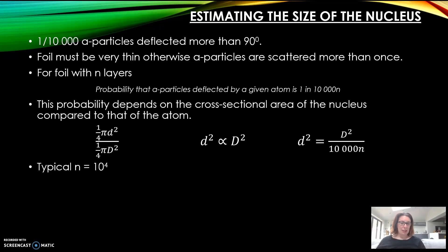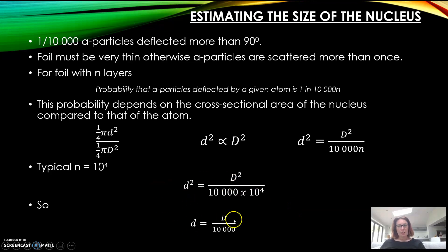Plugging that into the equation you get this, and then taking out the square roots you end up with d, the diameter of the nucleus, is equal to the diameter of the atom divided by 10,000.